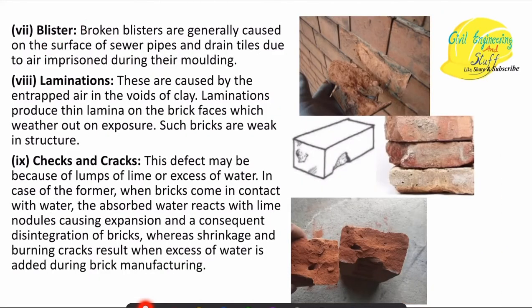The next defect is blister and lamination, both caused by entrapped air. During the molding of clay for bricks, air gets entrapped in between the clay particles. When such bricks are used for lining sewer pipes, the sewer waste contains chemicals that have an adverse impact on the bricks, causing them to break into small fragments. This breakage of the brick surface into small fragments is called blister, and it generally occurs on the surface of sewer pipes.